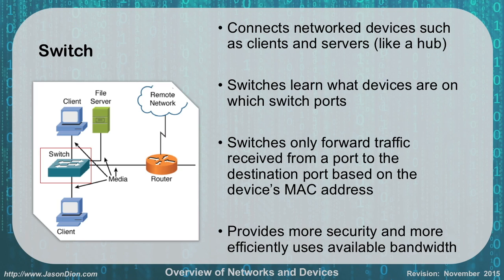Switches are an upgraded version of a hub. They can connect network devices like clients and servers together, but they learn which devices are on which switch ports. So when one device wants to send a message to another, the switch forwards it only to that specific device — other devices don't see it. This increases security and bandwidth, and you can have multiple separate conversations happening simultaneously. Switches forward traffic based on MAC addresses — machine addressable codes — which we'll talk about later.